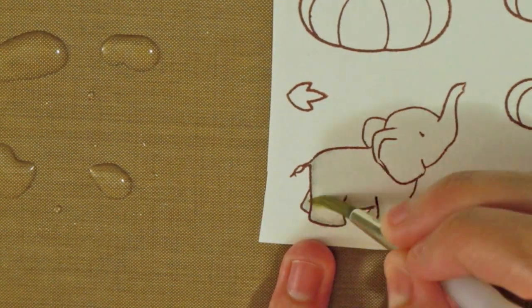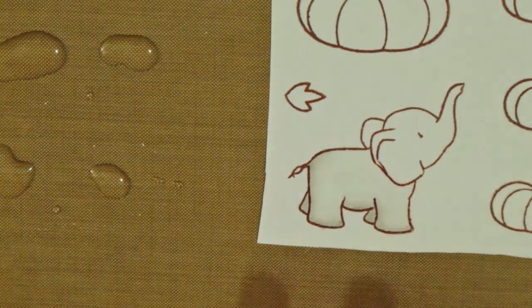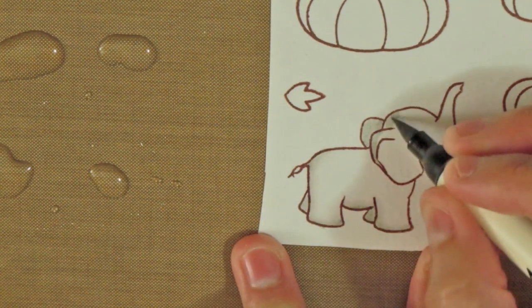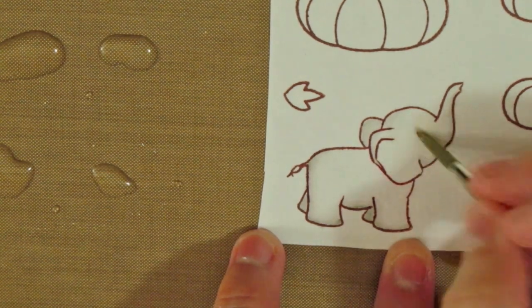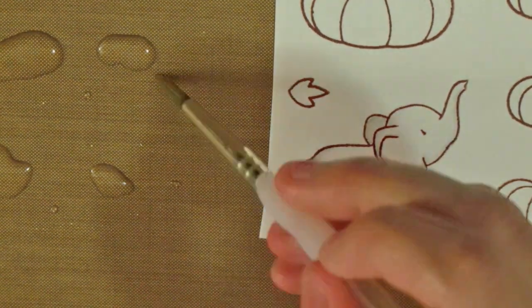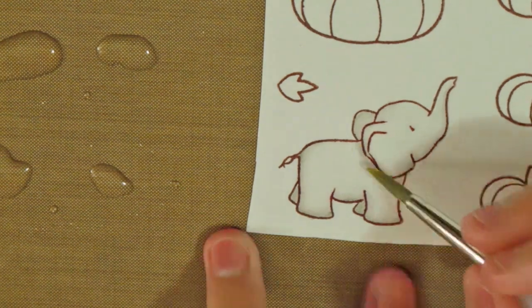To color the cute elephant I added some pumice stone, taking the distress marker directly to the paper, adding it to the edges of the image. Now I am blending it with a wet brush. I am adding more color where I want it to be darker.